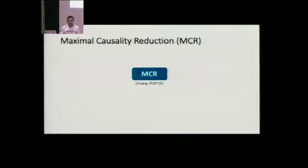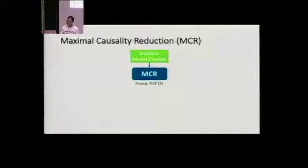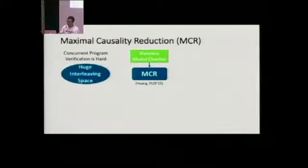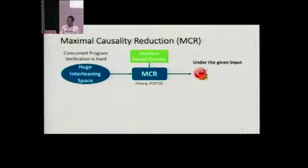As this work is based on maximum causality reduction, here we just call it as MCR. So let's start with what MCR is. Briefly speaking, MCR is a stateless model checker. It is very similar to dynamic partial order reduction, and the purpose of this work is to verify the correctness of concurrent programs.